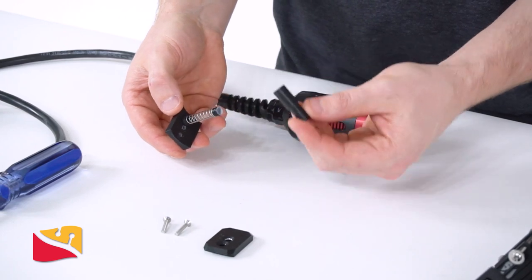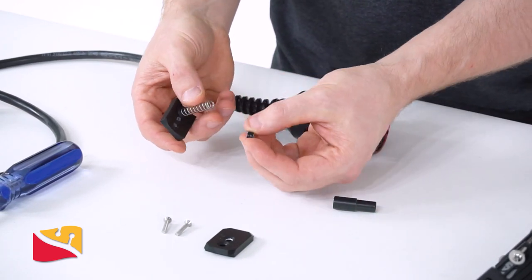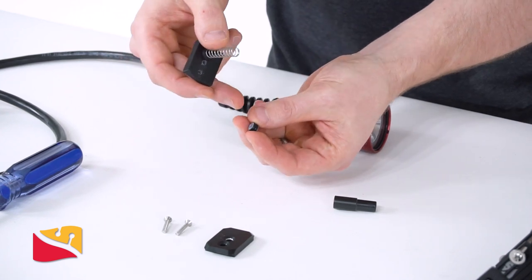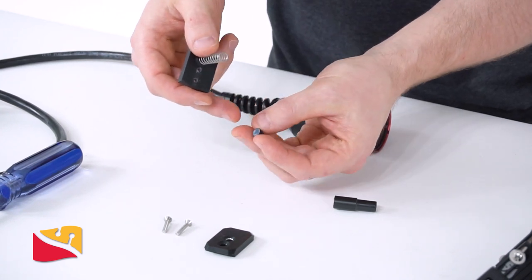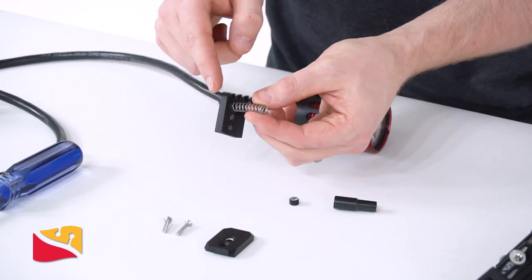This assembly consists of the button, two magnets with a piece of Teflon tape, and the spring.